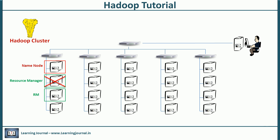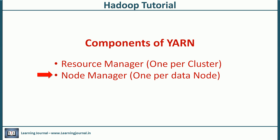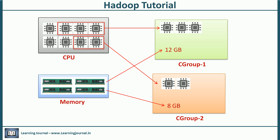If the active Resource Manager goes down, the standby will take over the role of the active Resource Manager. There is one Node Manager for each node in your cluster. The Node Manager is a slave service responsible for launching and monitoring containers. A container is a Linux control group — a Linux kernel feature that allows us to allocate CPU, memory, disk IO, and network bandwidth to a user process.